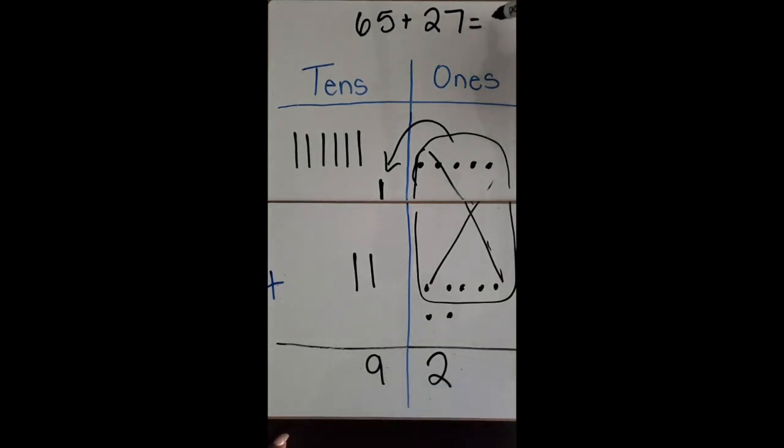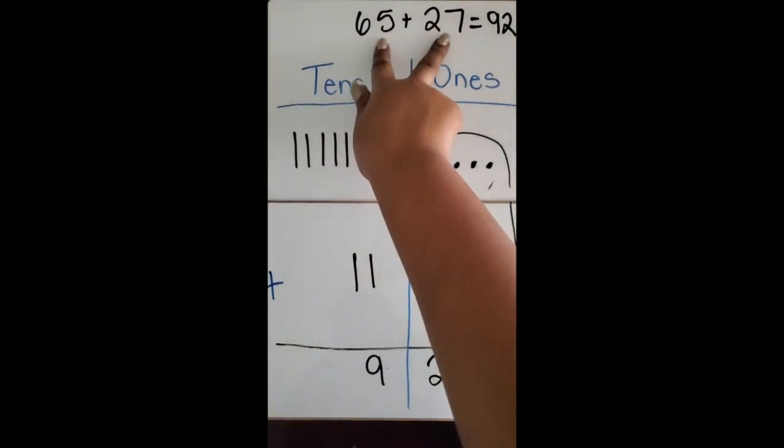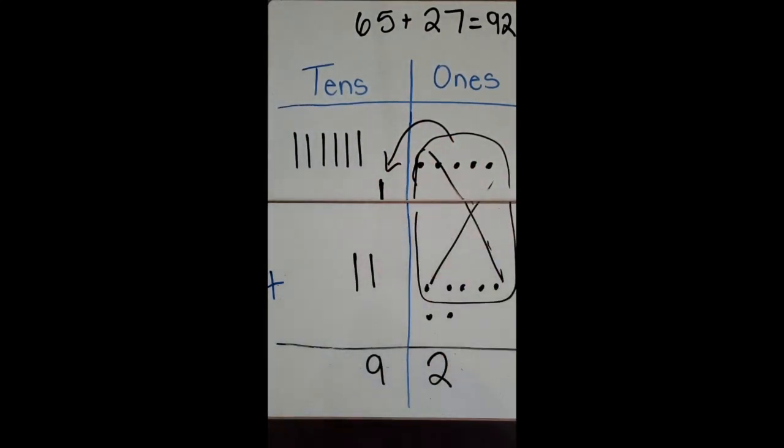Which shows me my sum is 92. We just added two two-digit numbers using a quick pic of base 10 blocks.